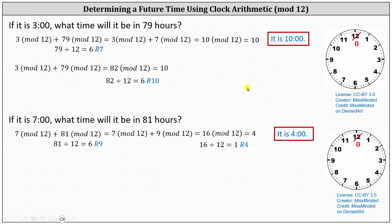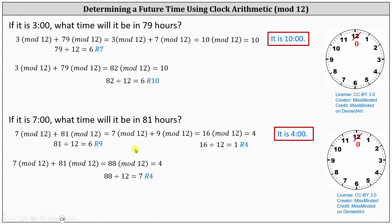For the second, more efficient method, we first find the sum of seven and 81, which gives us 88 mod 12, which is equal to the remainder when 88 is divided by 12, which is four, indicating it's four o'clock. To use the clock for this method, we would start at zero and count ahead 88 hours, which would be seven complete rotations and four additional hours.